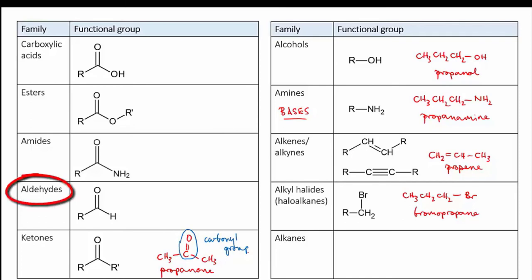Then we have the aldehydes. These molecules also have a carbonyl group, the C double bond O, but it will always be at the end of the molecule, not in the middle. Here's an example. This one's known as propanal.